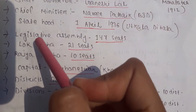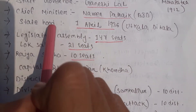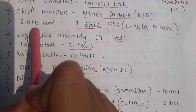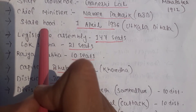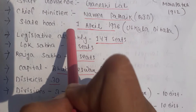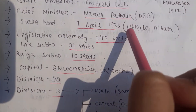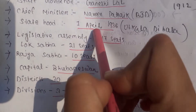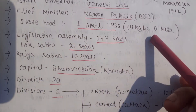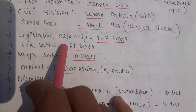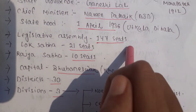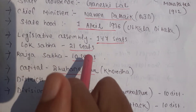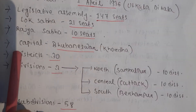The statehood of Odisha — meaning the establishment of Odisha as a state — was on 1st April 1936, and we celebrate it as Uttkala Dibasa. The Legislative Assembly of Odisha has 147 seats, 21 seats in Lok Sabha, and 10 seats in Rajya Sabha.